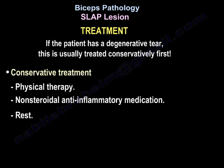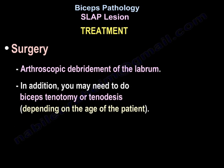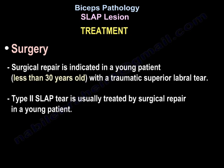Treatment: if the patient has a degenerative tear, this is usually treated conservatively first with physiotherapy, non-steroidal anti-inflammatory medication, and rest. Surgery is done if conservative treatment fails, especially in middle-aged patients. Surgery is usually arthroscopic debridement of the labrum; you may also need to do biceps tenotomy or tenodesis depending on the age of the patient. Surgical repair is indicated in a young patient less than 30 years old with a traumatic superior labral tear.